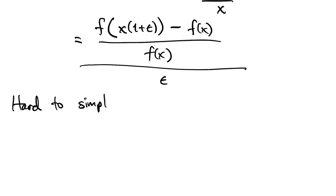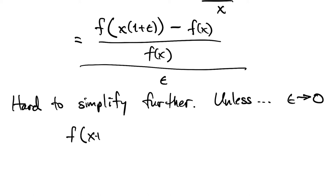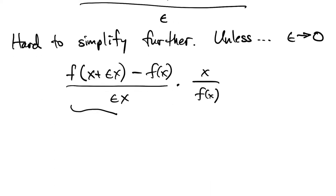Now it's hard to simplify this much further for a general function f, unless we take a limit and let epsilon go to zero. After all, the whole idea is to see what happens with small floating point errors. So now if we do a little trick and we multiply and divide by x in our expression above, then this whole thing on the left suddenly looks quite familiar to us as epsilon goes to zero, it's just the derivative of f.